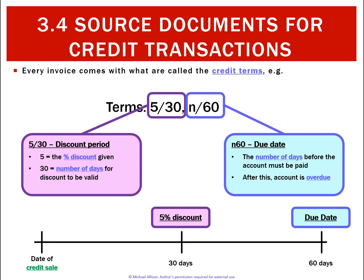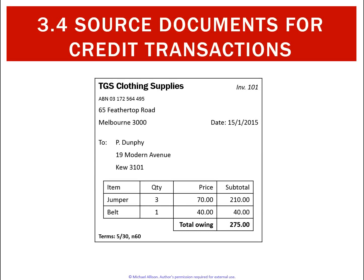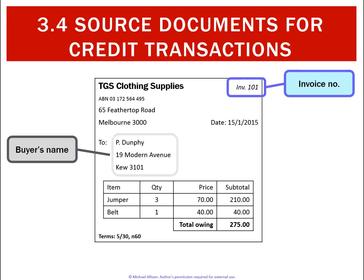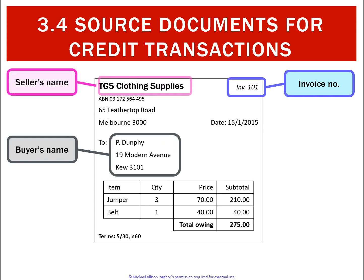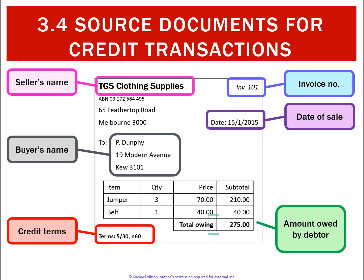Looking at a typical invoice, the important information to look for: the invoice number at the top — each invoice should have a unique number. The buyer's name will appear underneath, and the seller's name will be at the top as the person issuing the document. We'll also have the credit terms, the date, and lastly the amount that is actually owed by the debtor.